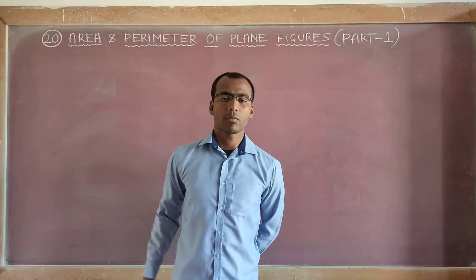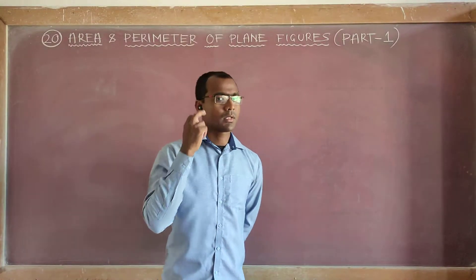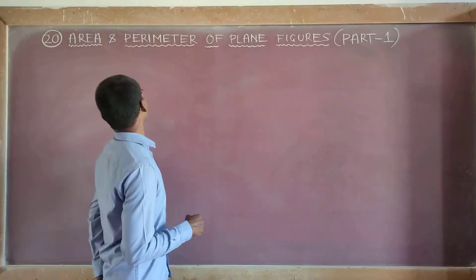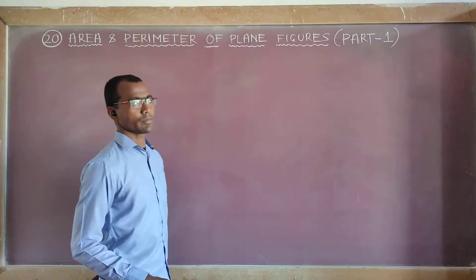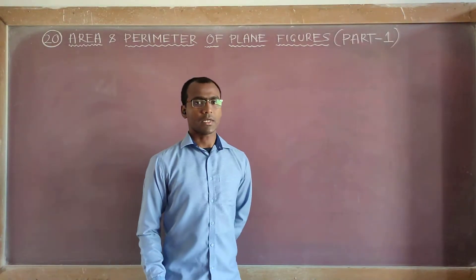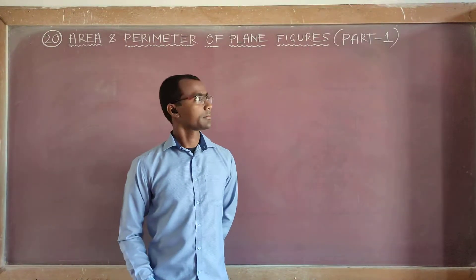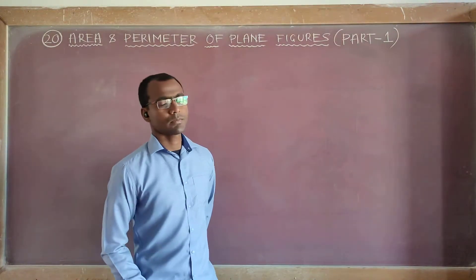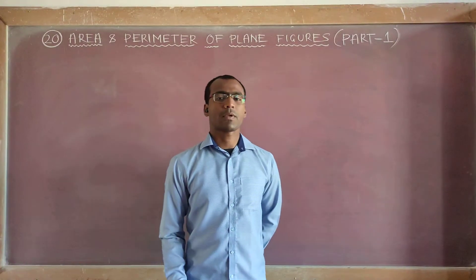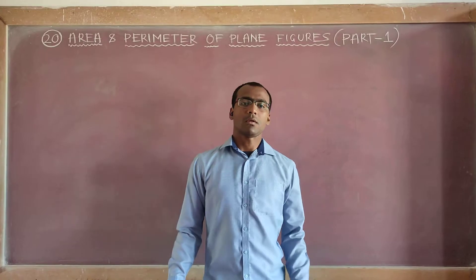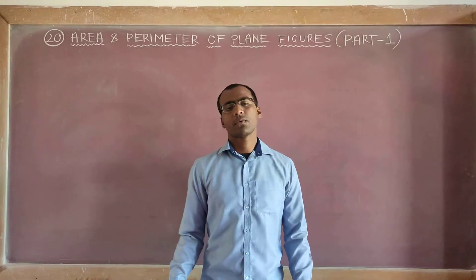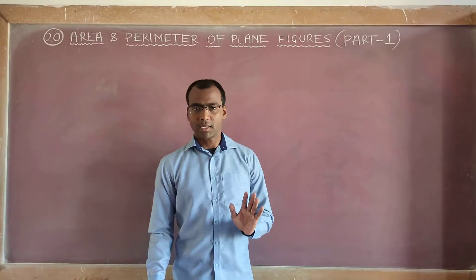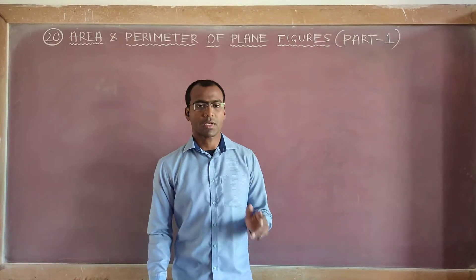Hello children, welcome to my channel. This is chapter number 20, area and perimeter of plane figures, part 1. In this part, I will explain how to find the area and perimeter of triangles only.